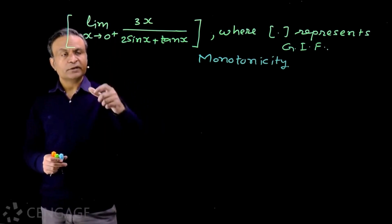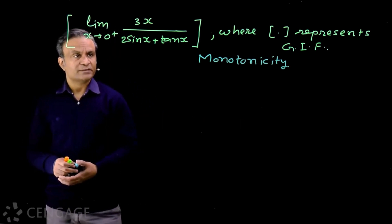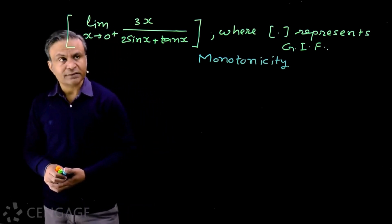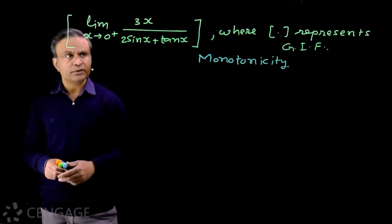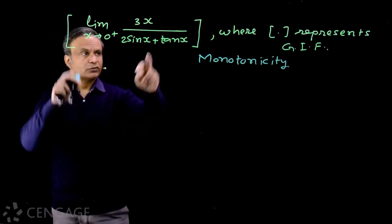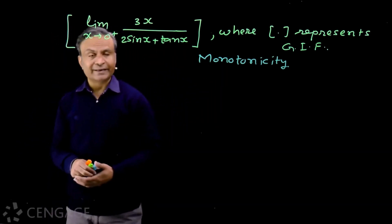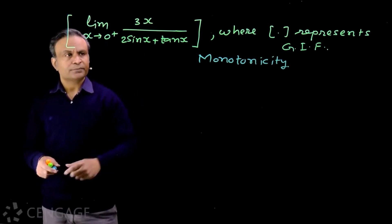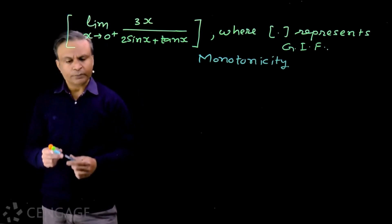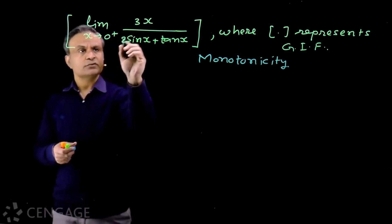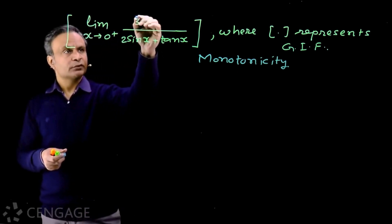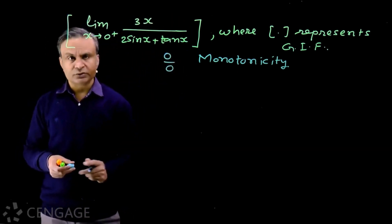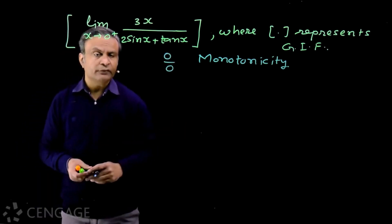We have this limit: limit x tends to 0+ of 3x upon (2sinx + 10x). We have to find the greatest integer less than or equal to this limit. The square brackets represent the greatest integer function. Now this limit — we first check the form. When x tends to 0+, this expression takes the form 0/0, which is an indeterminate form.